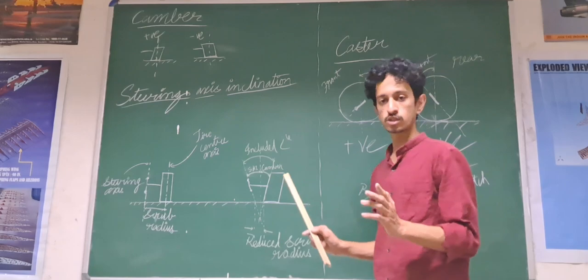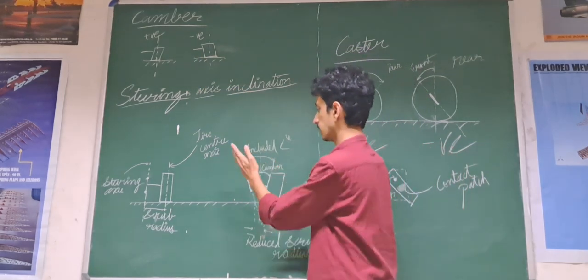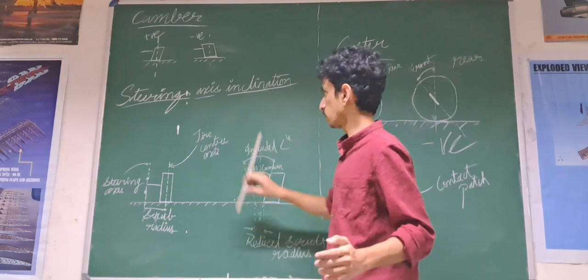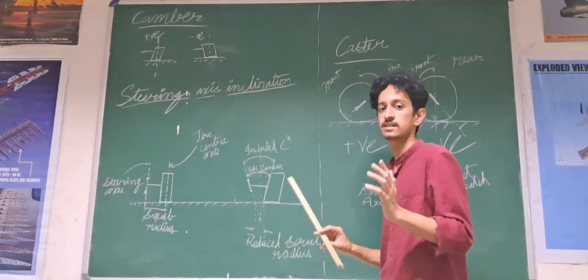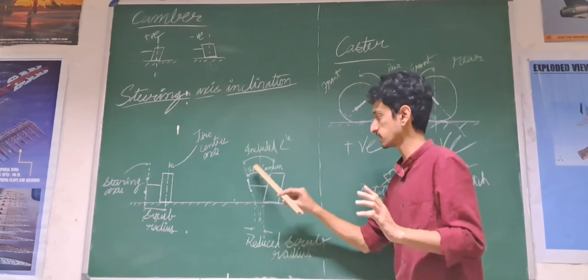Now, this can be reduced by using a positive camber combined with a steering axis inclination. All these are exaggerated angles and the actual cambering and steering axis inclination is not as much as we see here.